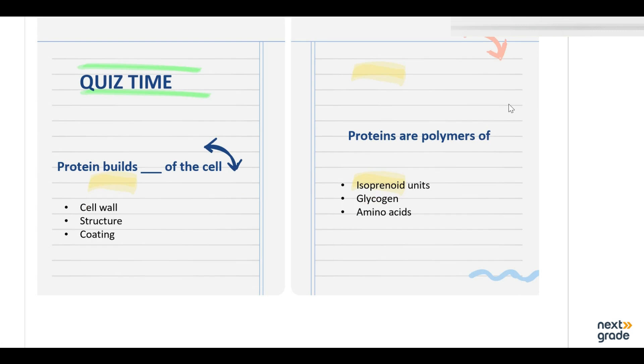Then there is a quiz time for you guys. Protein builds the blank of the cell. Protein, what do they make? Like the cell wall, like structure and coating? The cell wall is not a living component, so what do they make? Cell wall will come out, so they make structure. Then proteins are the polymers of isoprenoid unit? No, they are terpenoids. So it will be glycogen? No, amino acid is the correct answer.